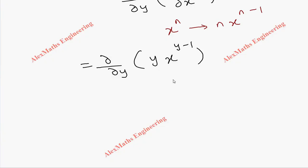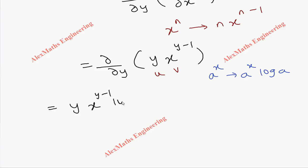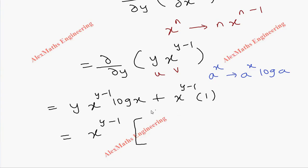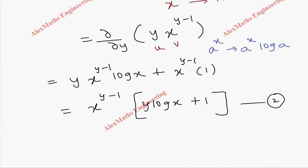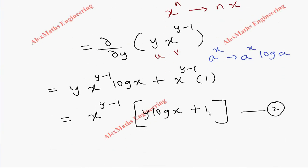x is treated as a constant. We follow the uv product rule. First term y written as it is, then derivative of x^(y-1) — using the formula a^x derivative is a^x · log a — gives x^(y-1) · log x. Then second term x^(y-1) as it is, derivative of y is 1. Taking x^(y-1) common, we get x^(y-1)(y log x + 1).